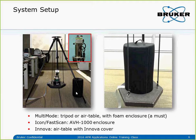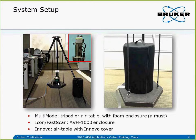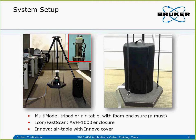Acoustic noise will show up in the image if not isolated properly. If you have a good environment — relatively quiet with a solid floor — the air table is typically sufficient for the multimode. For the ICON and FastScan, the AVB-1000 vibration isolation that comes with the system is typically good enough if the lab environment is relatively quiet. For the Innova with the air table and acoustic enclosure, it's also sufficient to get atomic resolution images.